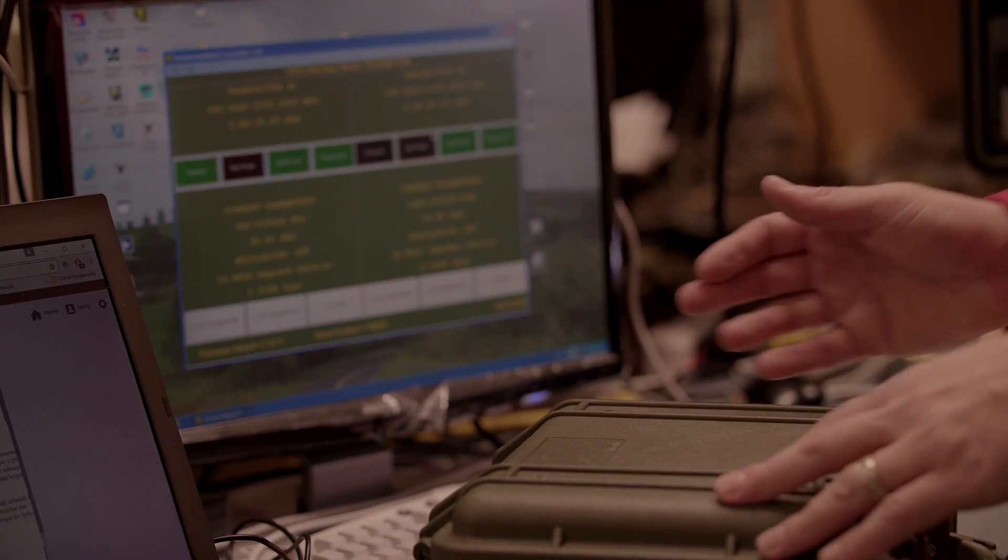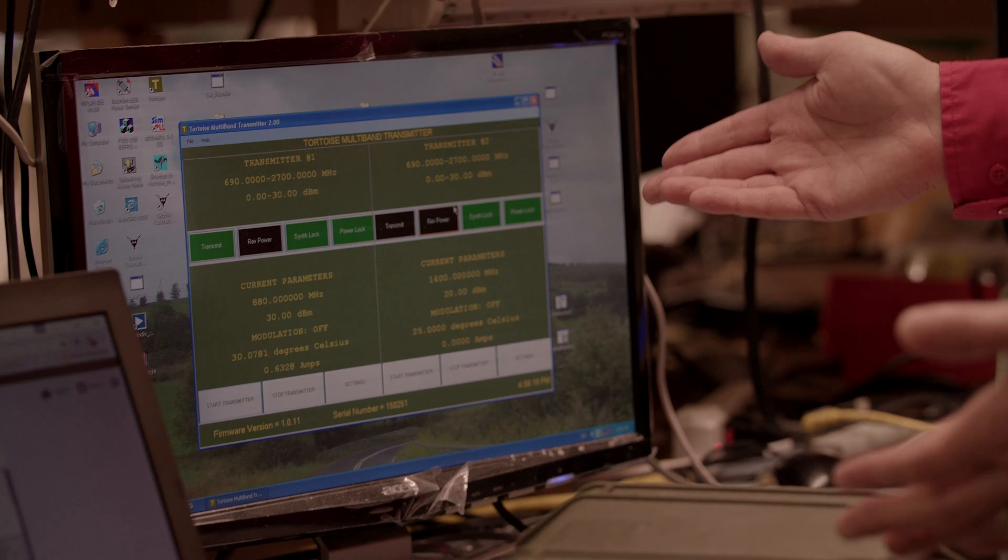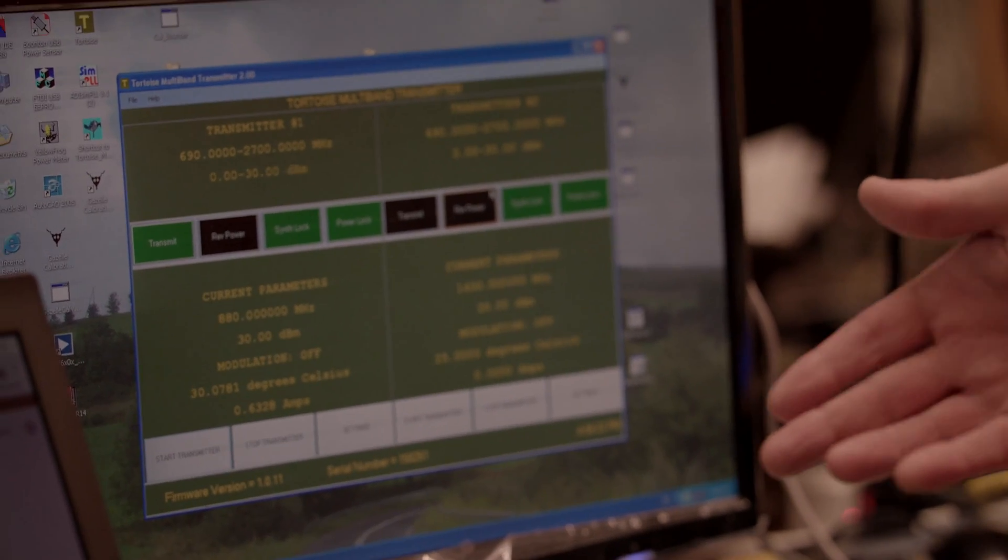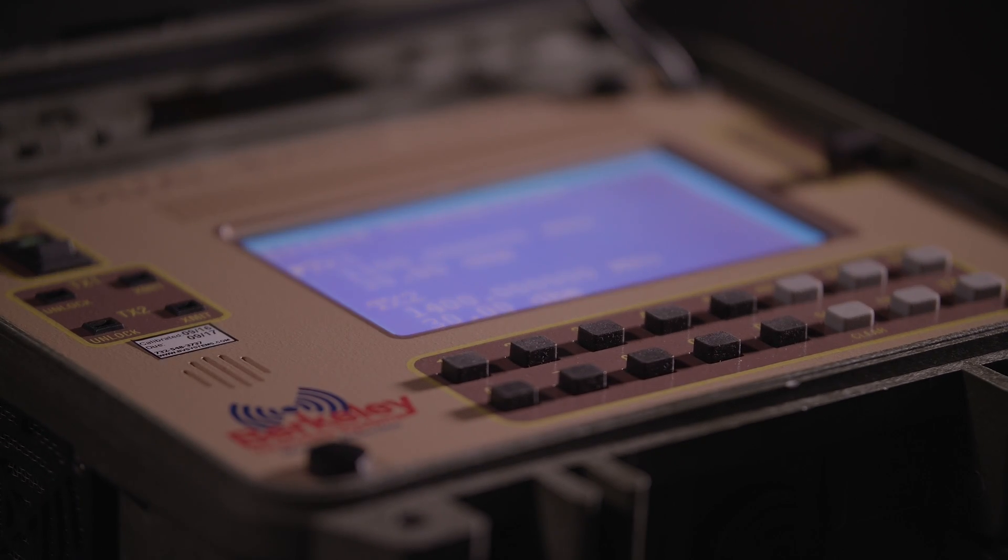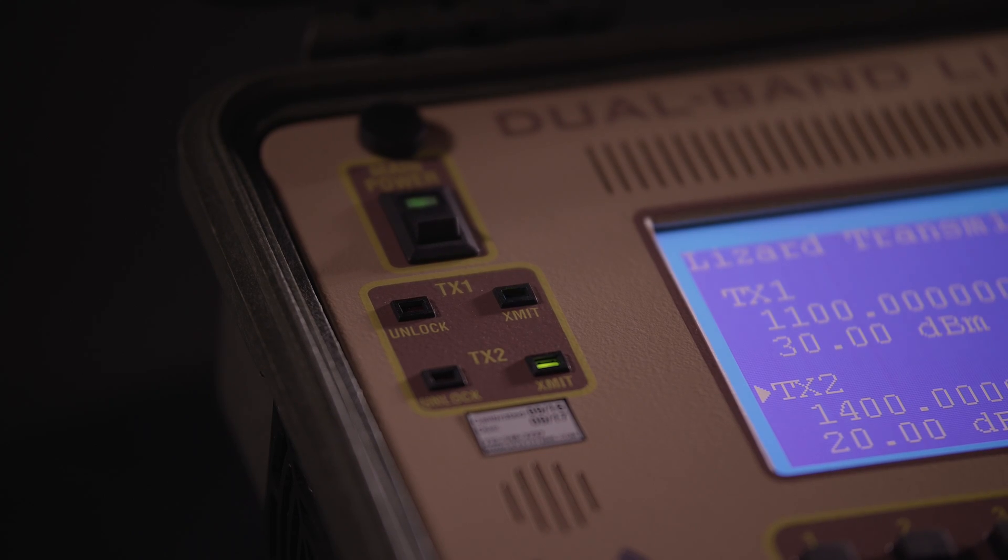Another very popular feature that our customers love is the PC utility software that comes standard. It allows you to simply connect your Windows PC and change the frequency, raise and lower the power, or turn on and off the transmitter, all remotely from the ease of your keyboard.